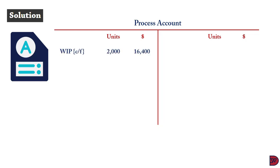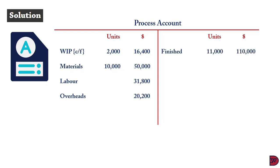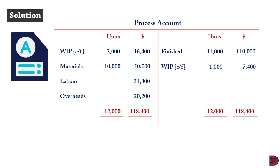For the process account, inputs include: work in progress brought forward — 2,000 units at $16,400; materials — 10,000 units at $50,000; labor — $31,800; overheads — $20,200. Output side: finished goods — 11,000 units at $110,000; closing work in progress — 1,000 units at $7,400. Both sides balance at 12,000 units and $118,400.